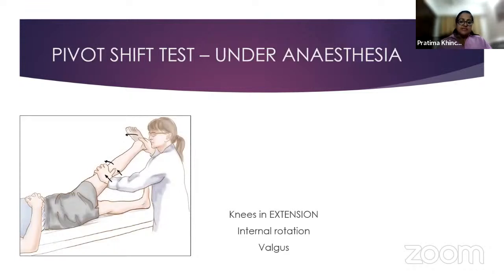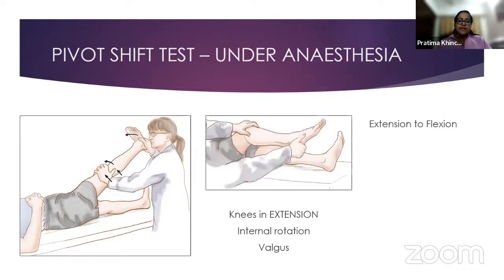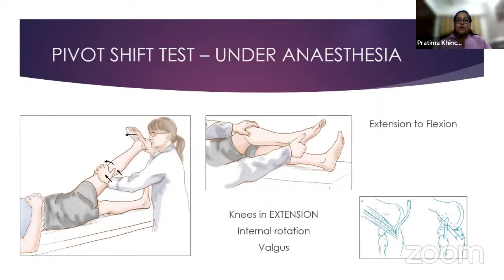The pivot shift test is usually best done under anesthesia. The knee is in extension; you internally rotate the leg, give a valgus force at the proximal tibia, and bring the knee from extension to flexion — at roughly 30 degrees you feel a pop or jerk. The main reason to do this test is to determine whether to perform any extra procedure like a lateral extra-articular tenodesis or an ALL reconstruction in a very brisk or positive pivot test.